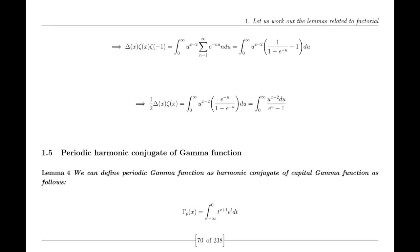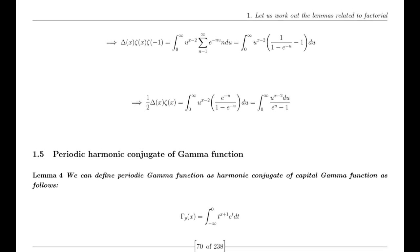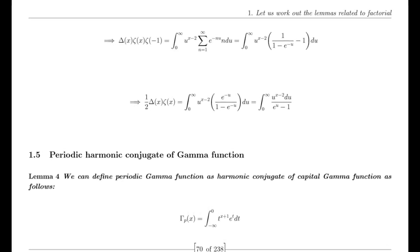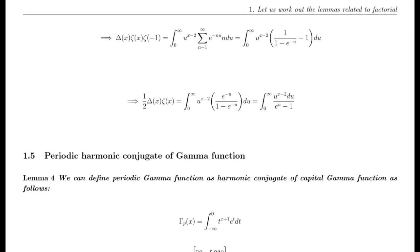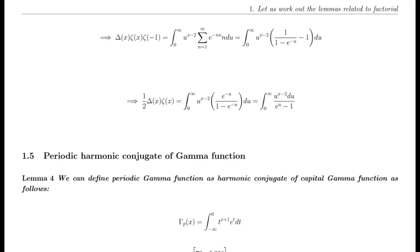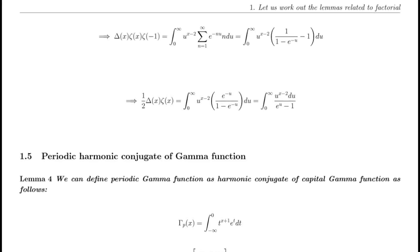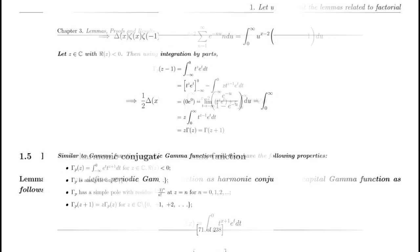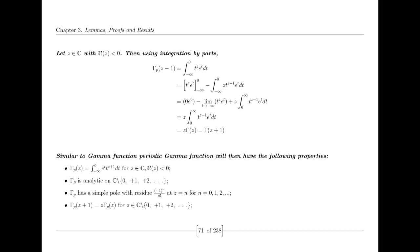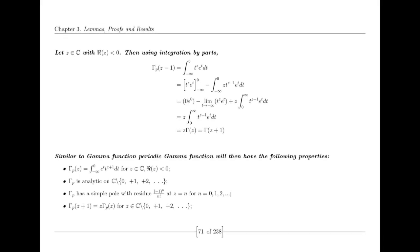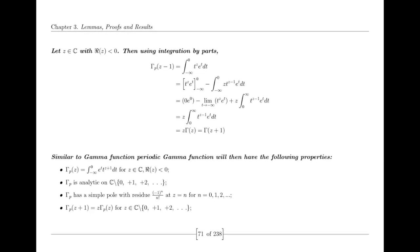Harmonic conjugates are not mere mathematical conveniences; they represent a profound symmetry in complex analysis. By considering the Riemann zeta function in tandem with its harmonic conjugates — such as the alternate variant derived through the reflection properties of the zeta and gamma functions — we tap into a broader framework. This framework doesn't detract from the Riemann zeta function's centrality but rather enriches it, offering new pathways to understand its properties.